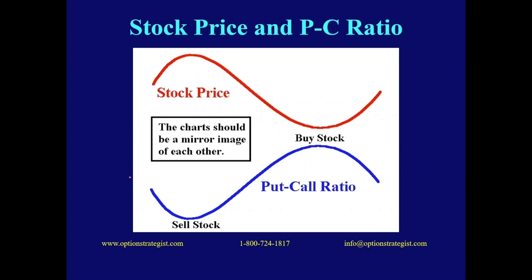In the perfect world, we'd have a complete mirror image between the stock price on top and the put-call ratio on the bottom. For example, as the stock is declining, people are buying puts and making money during the trend, which is typical of contrary indicators. But when the trend ends, people tend to overstay their welcome. A local maximum on the put-call ratio chart means that everybody's loaded up with puts, and it's time to buy the stock. So a local maximum is a buy signal. As the stock goes up, people buy calls, which forces the ratio lower. Eventually the call buyers have been over-satisfied, and the put-call ratio makes a local minimum — which is a sell signal for the stock.